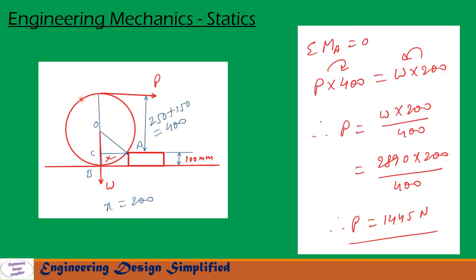From this diagram, on this roller force P is acting horizontally at a distance of 250, that is radius, plus this 150, that is 400 millimeter from point A. And similarly weight W is acting at the center of the roller. That distance from A is X that we have calculated in the previous slide. So X equal to 200 millimeter.